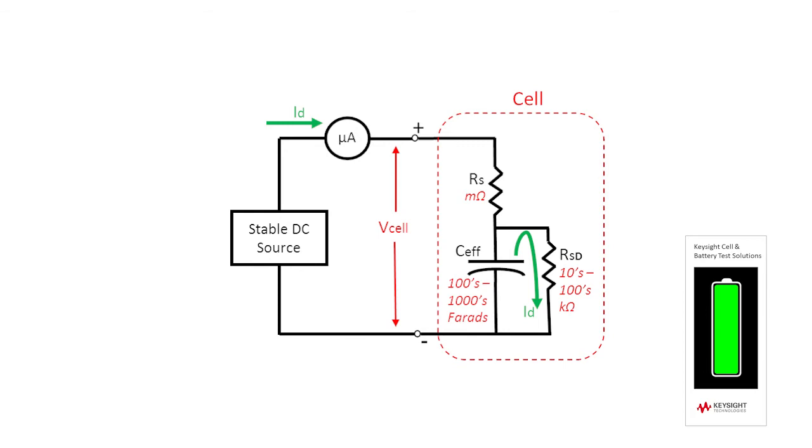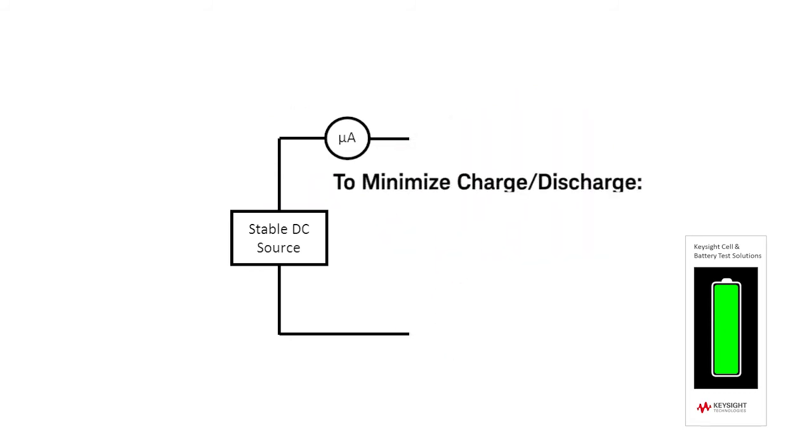Any difference between the DC source voltage and the cell's open circuit voltage will cause the cell to either charge or discharge. And that charge or discharge current flowing through the microamp meter will be in addition to the self-discharge current you're trying to measure. In other words, it's noise on top of the signal you desire to measure. To minimize any difference between the DC source voltage and the cell's open circuit voltage, the DC source must